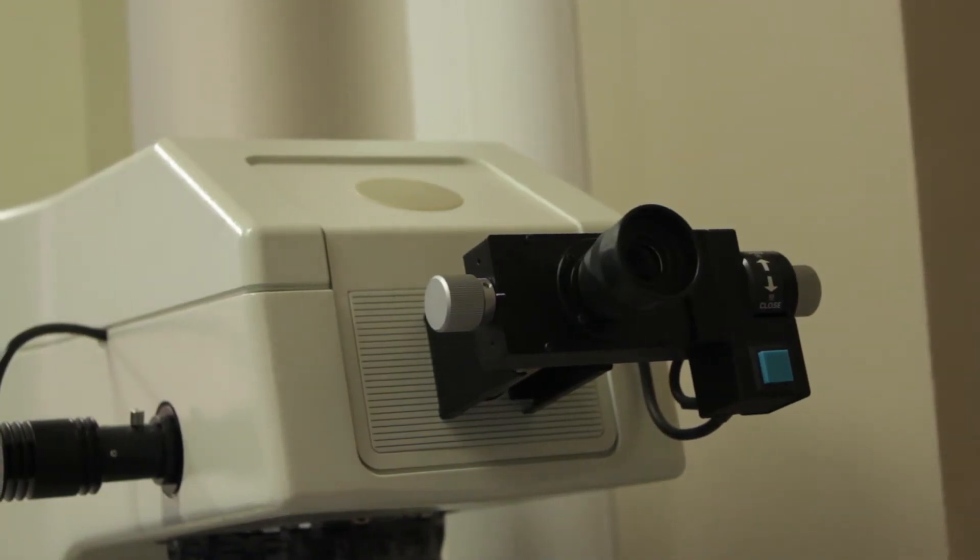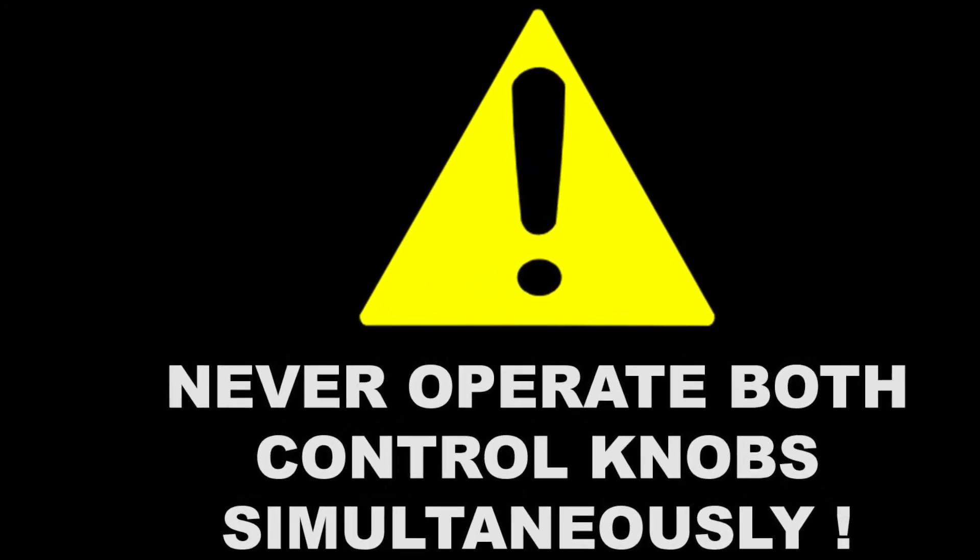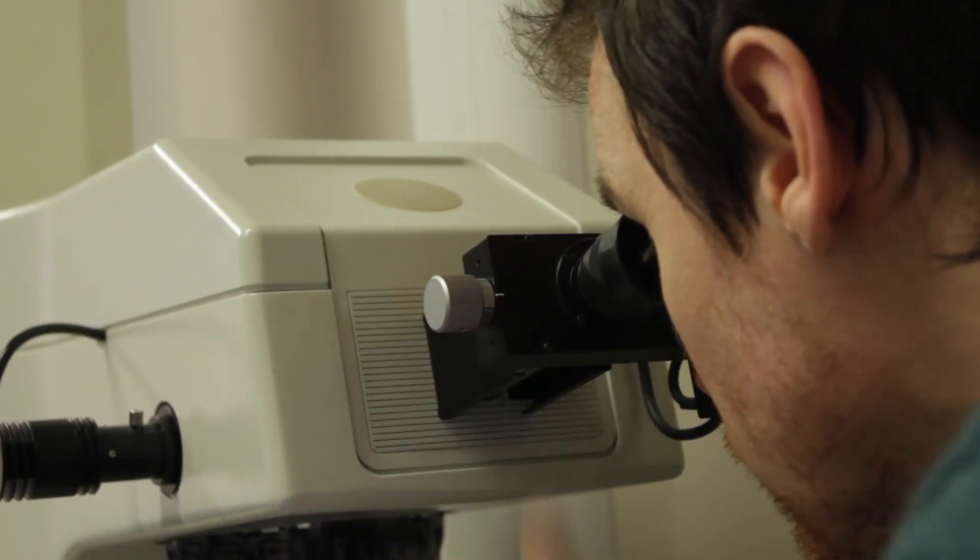Next, look through the viewfinder, but an important note: never operate both control knobs simultaneously. This can cause serious and permanent damage to the machine. First, adjust the left hand knob whilst looking through the viewfinder. This adjusts the pair of sighting lines in parallel. The aim here is to adjust the left line so that it touches the left hand edge of the diamond indentation.